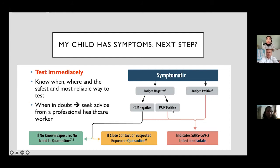A positive PCR makes it most likely a person has COVID — there is no need to do another PCR to confirm. A positive PCR already confirms it, and a person just needs to isolate. But if you tested negative with both PCR and antigen, and you have been exposed to someone who was positive, then you need to quarantine or stay at home.